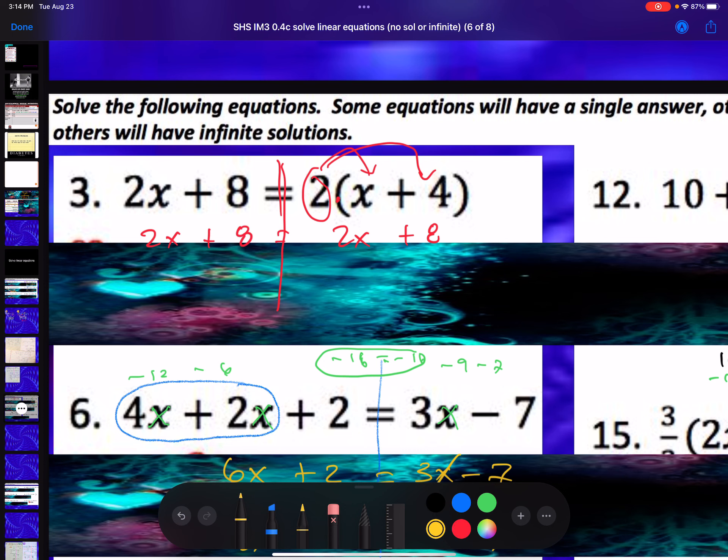But let's keep going. Let's say you don't know it. Subtract 2x from both sides, or you could have subtracted 8. It doesn't matter. Are they the same?